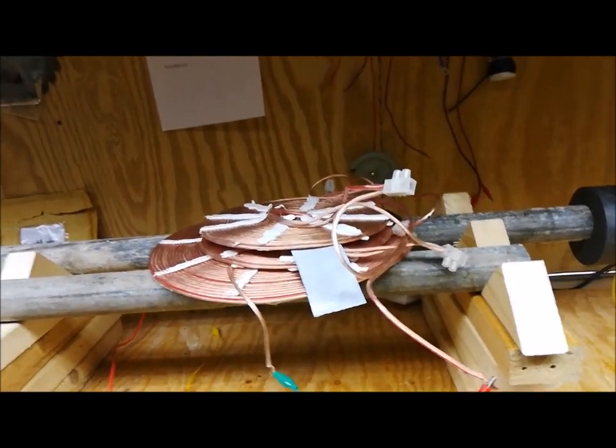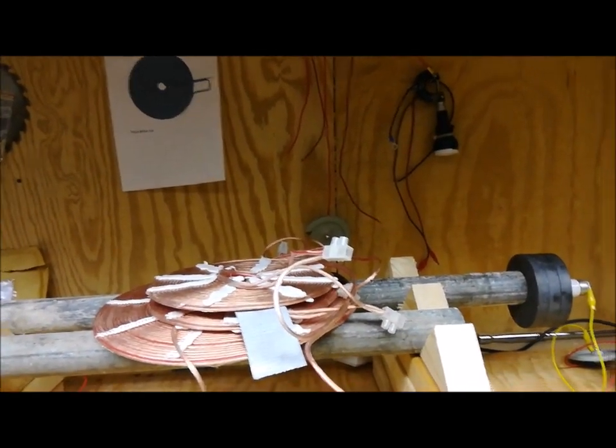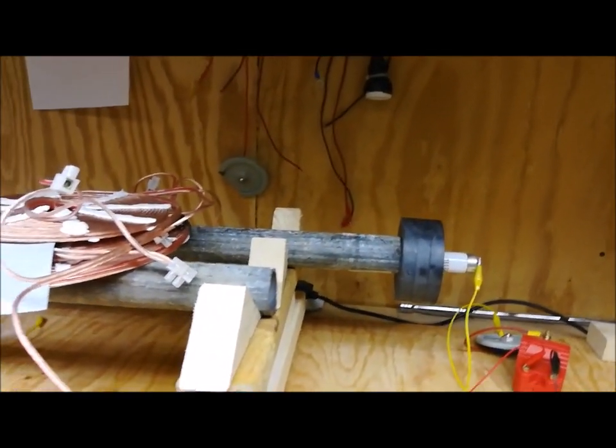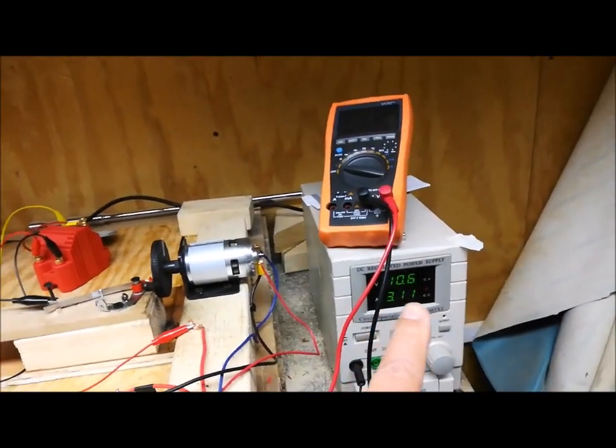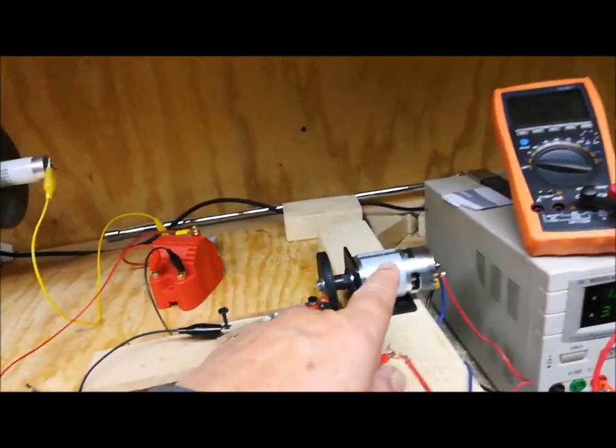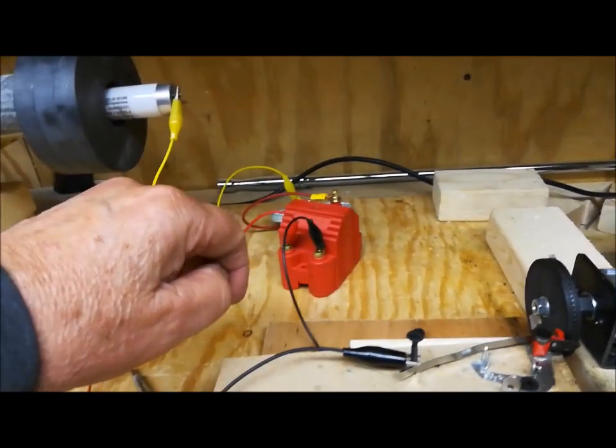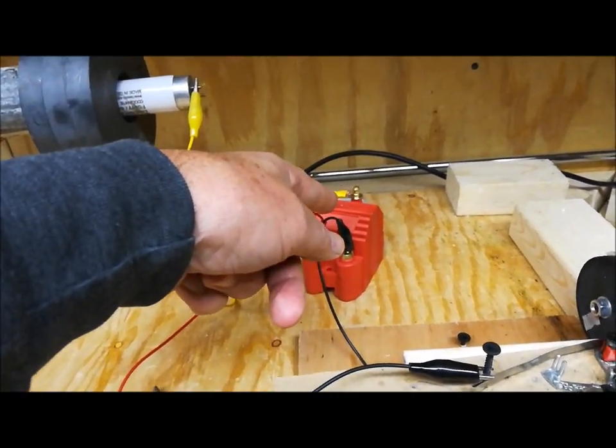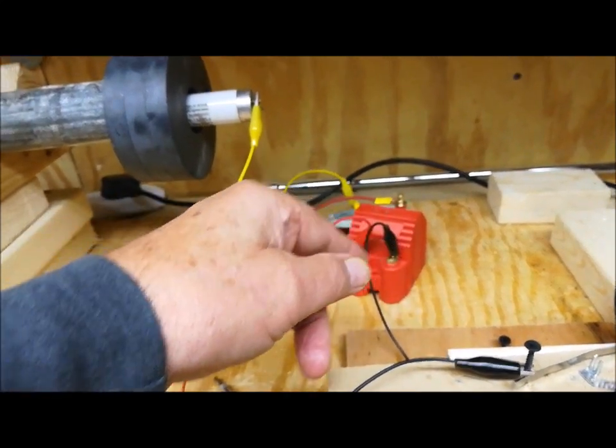So where do I start? Same sort of arrangement, boys and girls. We've got a power supply. I've dropped it down to 10 volts this morning, a little bit lower. We've got the DC motor with the spark gap here. We've got the coil, the car coil, 30,000 volts from 12 volts.